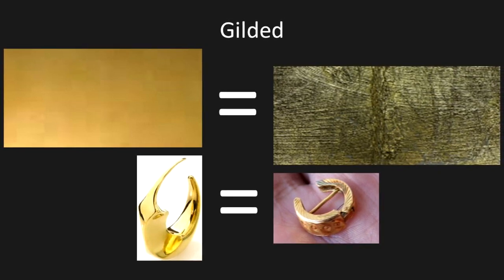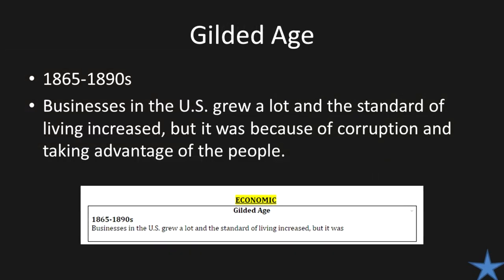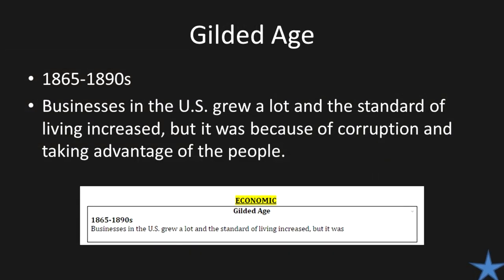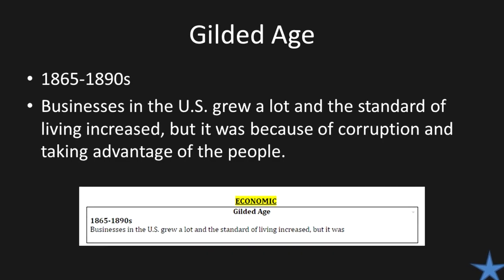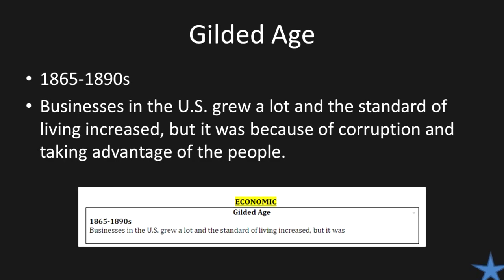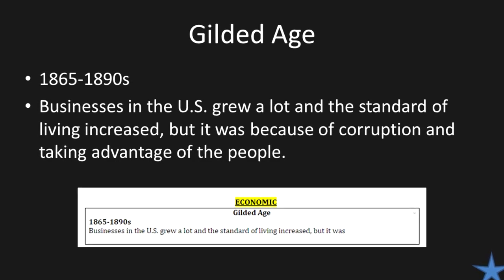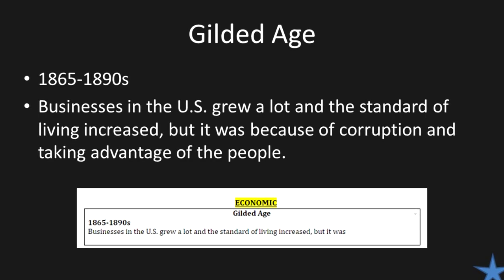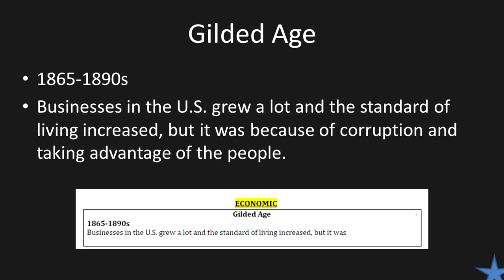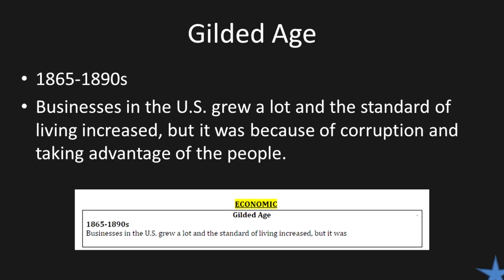That's exactly what's going on with the Gilded Age. Where it says Gilded Age, make sure you finish this out. The dates are 1865 to 1890s. Businesses in the United States grew a lot and the standard of living increased, but it was because of corruption and taking advantage of people. Go ahead and finish it out — if you need to pause the video you can always do so.